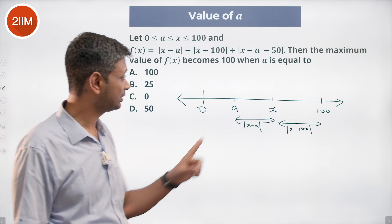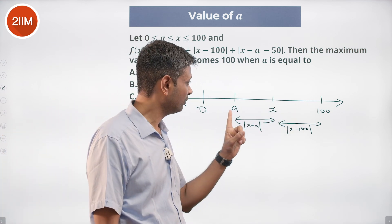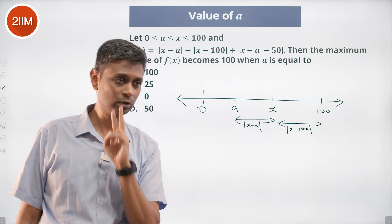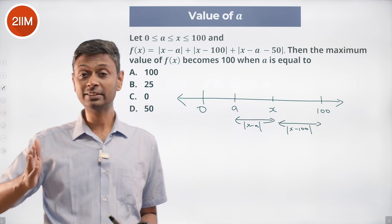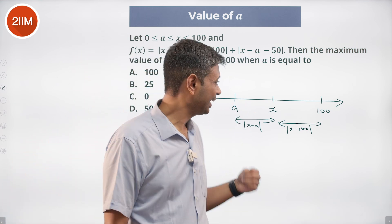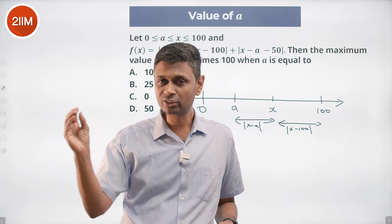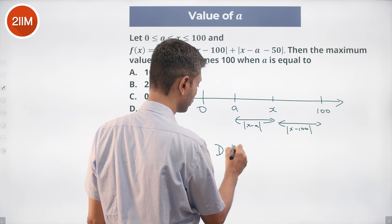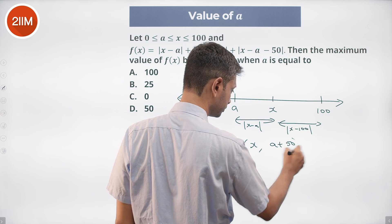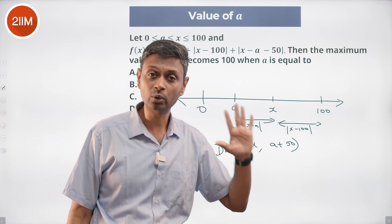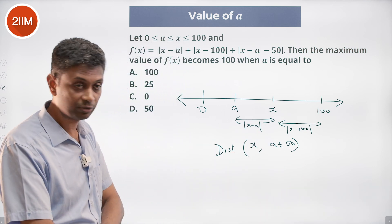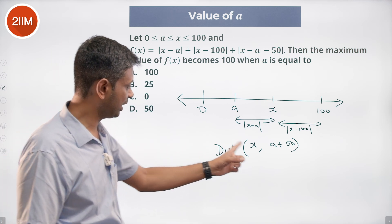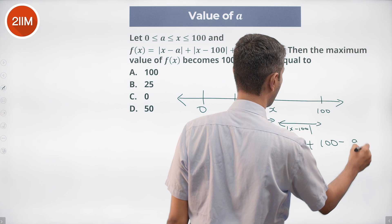For a given value of a, f(x) equals modulus of (x minus a) plus modulus of (100 minus x) plus modulus of (x minus (a plus 50)). The sum of the first two terms — distance between x and a plus distance between x and 100 — is always equal to 100 minus a when x lies between a and 100.